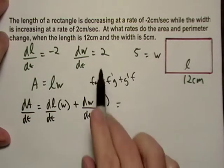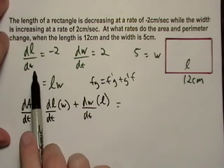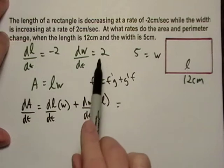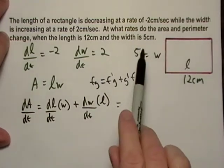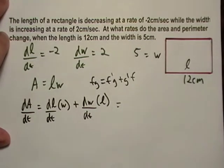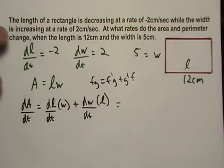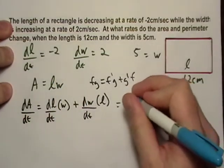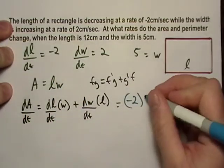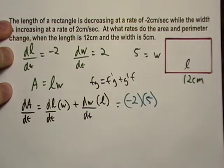And we can go ahead and just make all these substitutions because we know what dl is, dw is, we know what w and l are. So dl, let's see here, let's see if I can get a different color for this one. dl, well that's negative two, w is five.